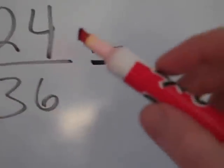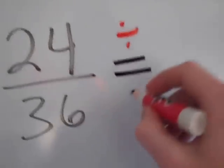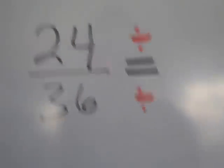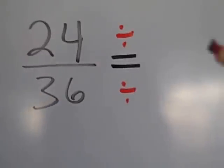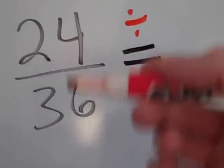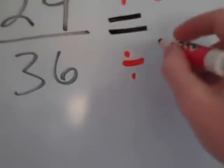They look at 24 and 36 and they try to think, what can I divide both 24 and 36 by? And you might think, hmm, I don't know. How about 6? 6 goes into both, so I'm going to divide by 6.